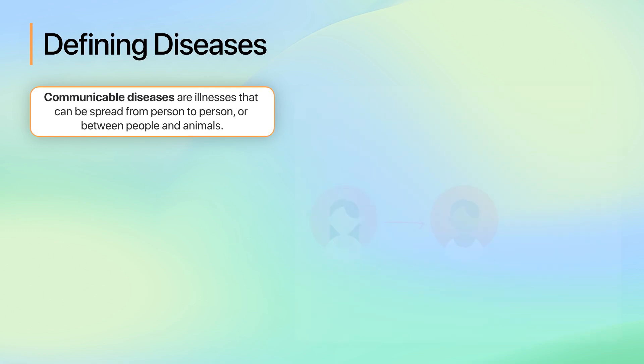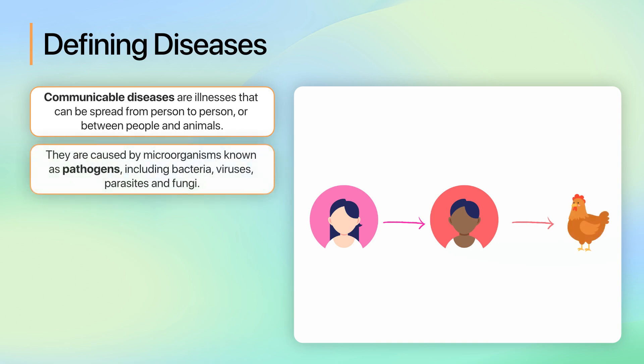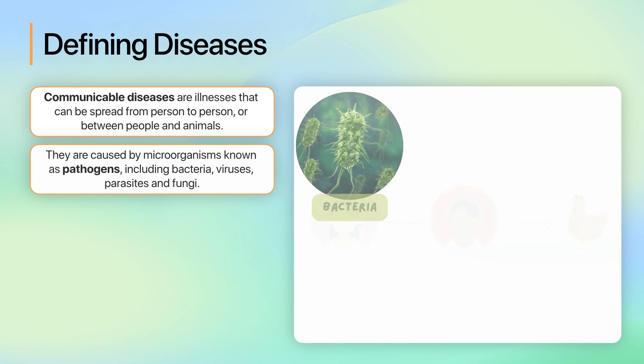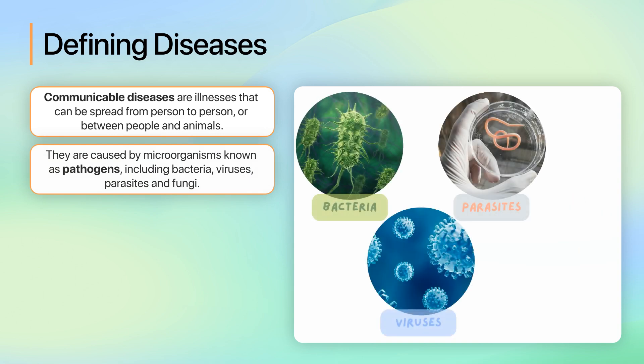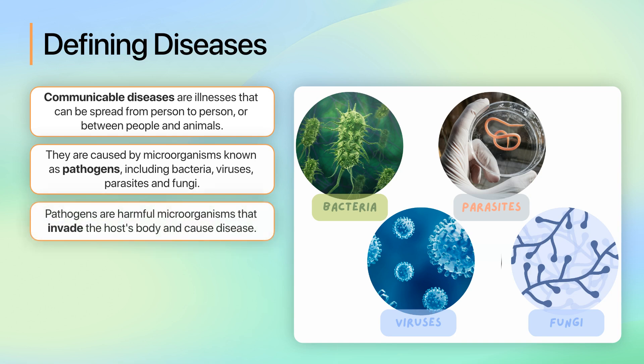Communicable diseases are illnesses that can be spread from person to person, or between people and animals. These diseases are caused by microorganisms known as pathogens, which include bacteria, viruses, parasites and fungi. Here are some key points to understand about communicable diseases. Pathogens are harmful microorganisms that invade the host's body and cause disease.